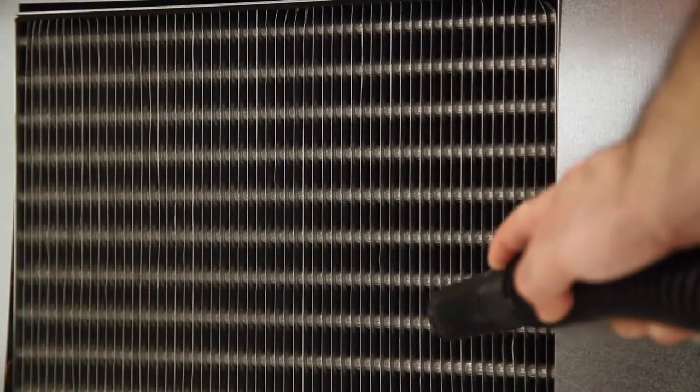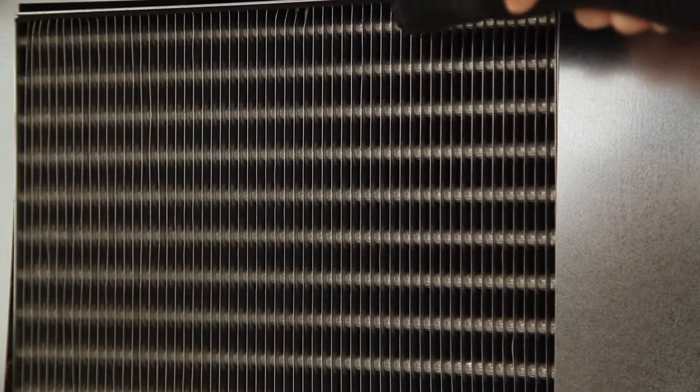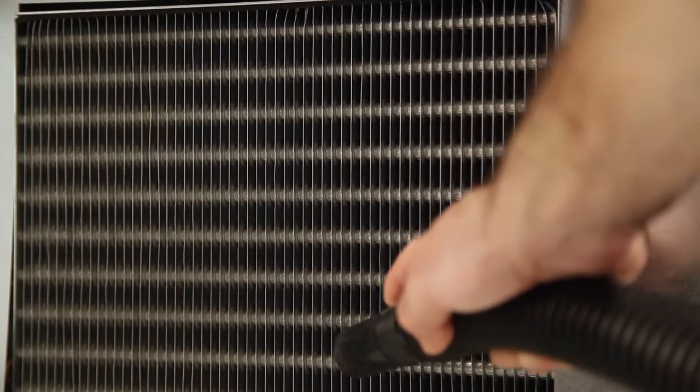After brushing the condenser coil, vacuum the dirt off the coil moving the vacuum up and down and never side to side as this could also bend the fins on the coil.